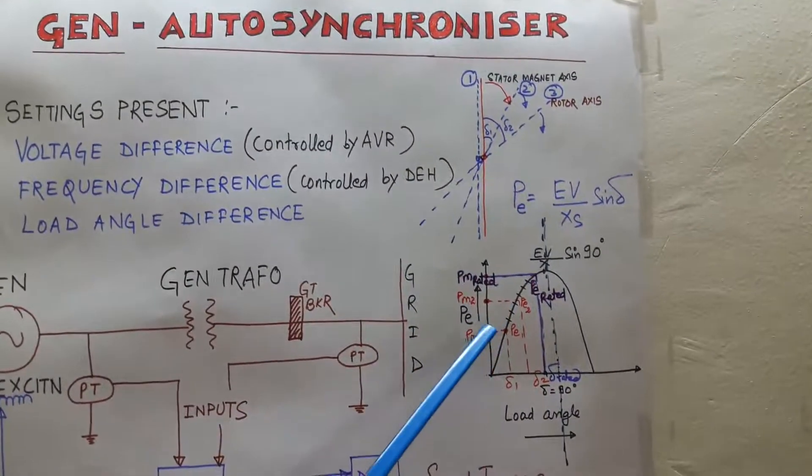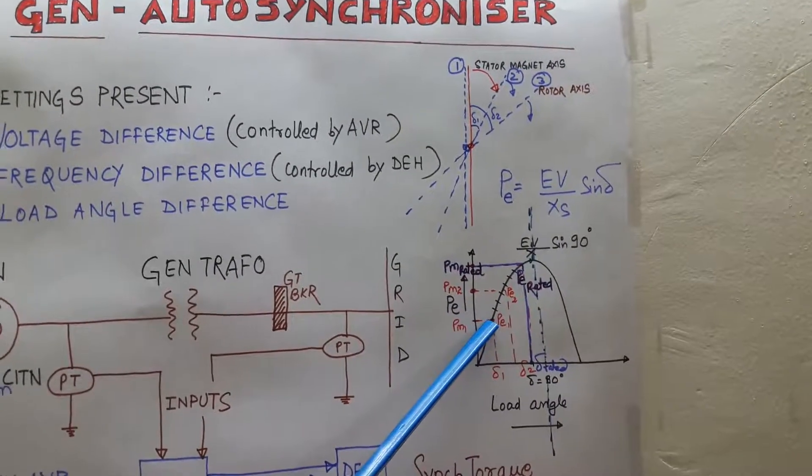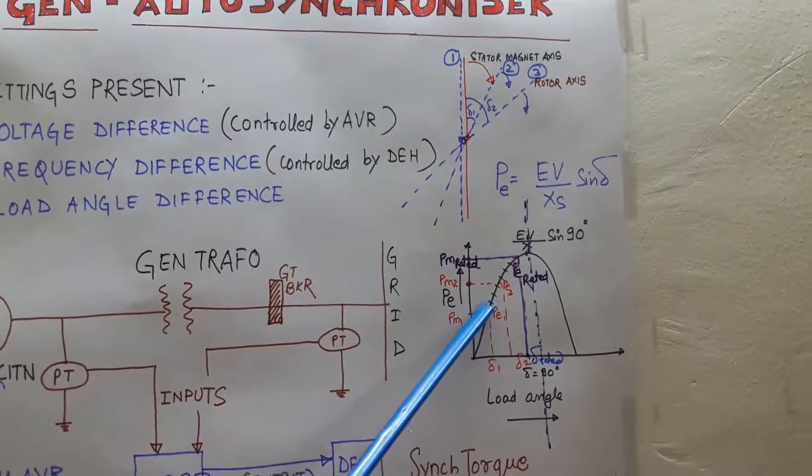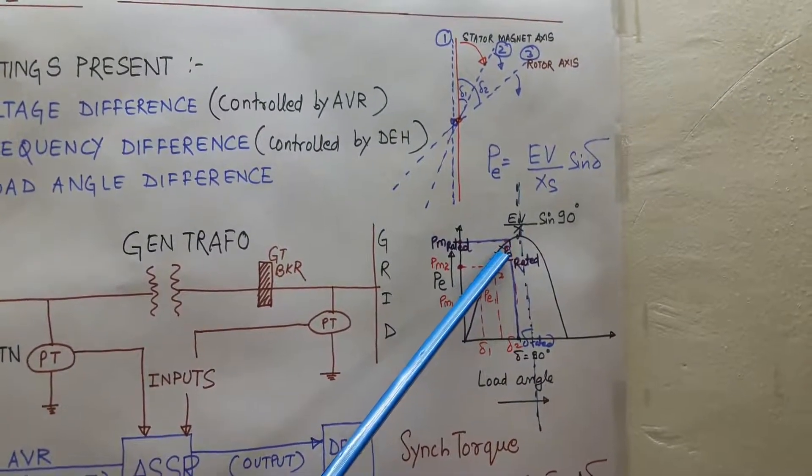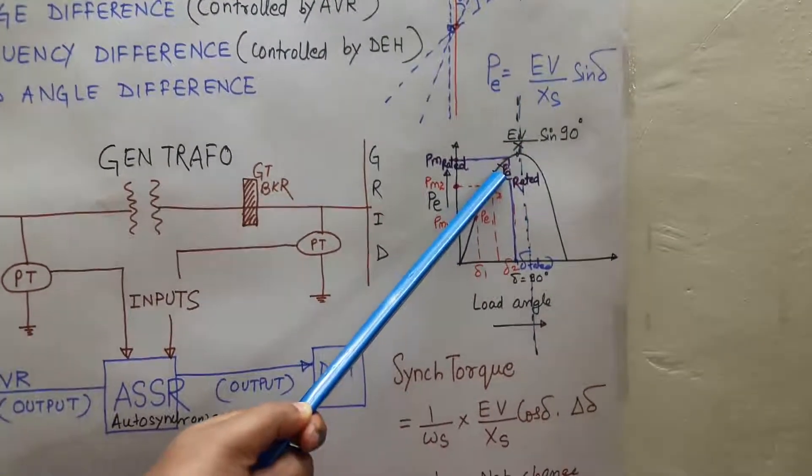So in this way the electrical output of the generator is increased and brought to its rated power after certain time period.